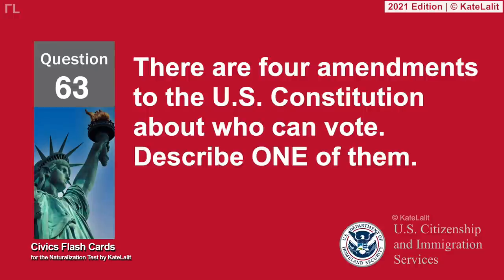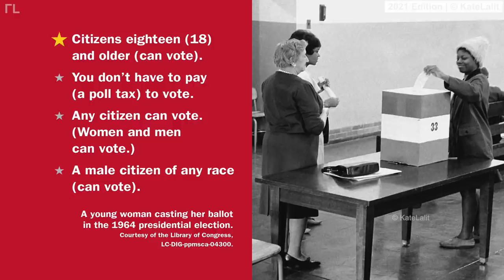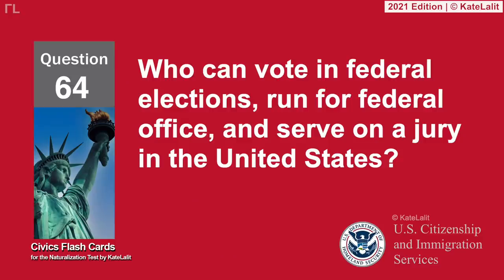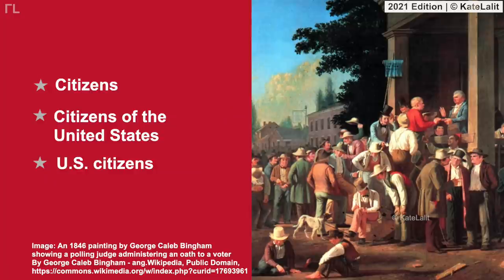There are four amendments to the U.S. Constitution about who can vote — describe one of them: Citizens 18 and older can vote. You don't have to pay a poll tax to vote. Any citizen can vote — women and men can vote. A male citizen of any race can vote. Who can vote in federal elections, run for federal office, and serve on a jury in the United States? Citizens of the United States.